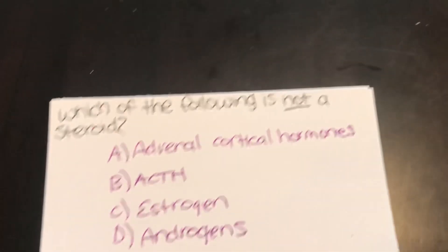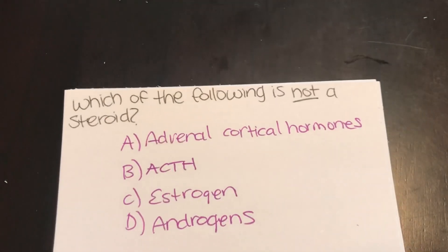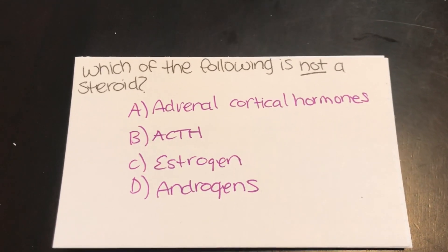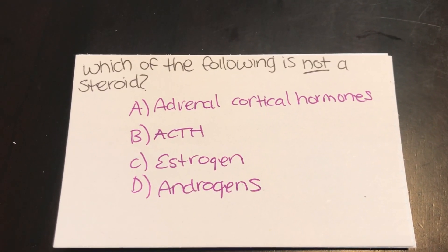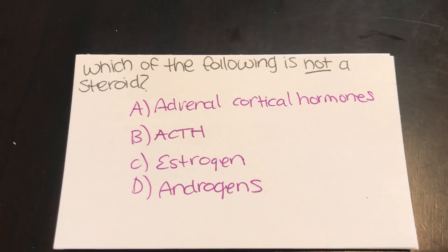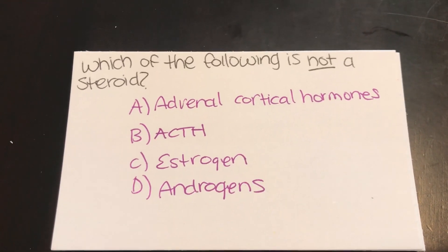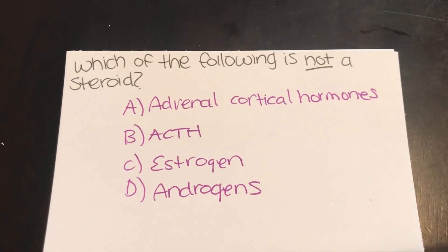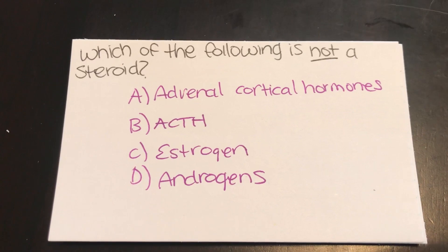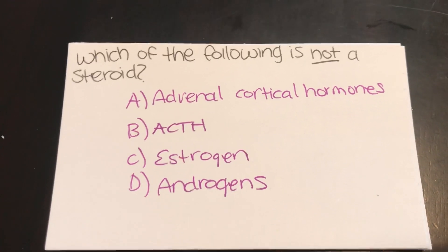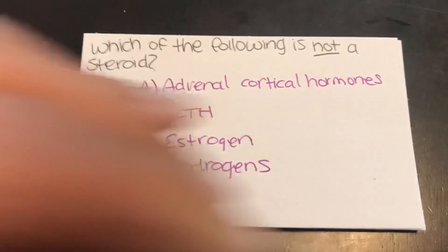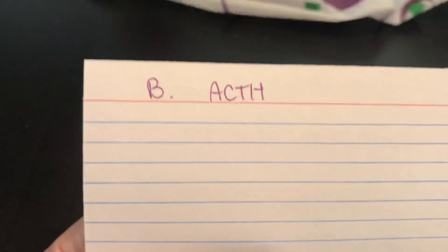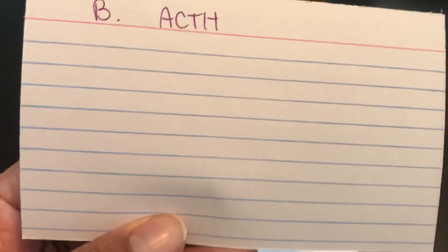Which of the following is not a steroid? A, adrenocortical hormones. B, ACTH. C, estrogen. Or D, androgens. Answer: B, ACTH.